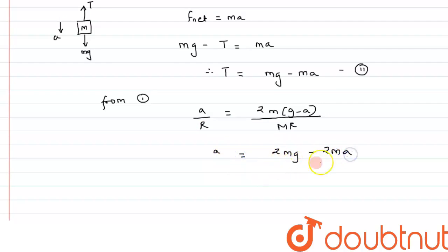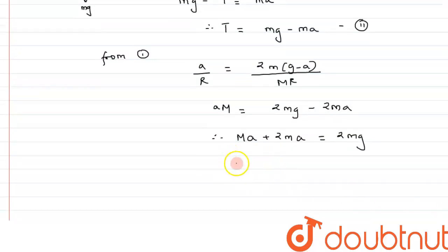Therefore, a + 2ma = 2mg. Taking a as common, we are left with 2m + M, which equals 2mg.